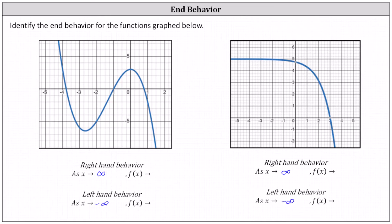Sometimes you'll see a plus sign in front of the infinity for positive infinity, but it's not required. For a quick review: on the horizontal or x-axis, positive infinity is to the right and negative infinity is to the left. On the vertical or y-axis, positive infinity is up and negative infinity is down.